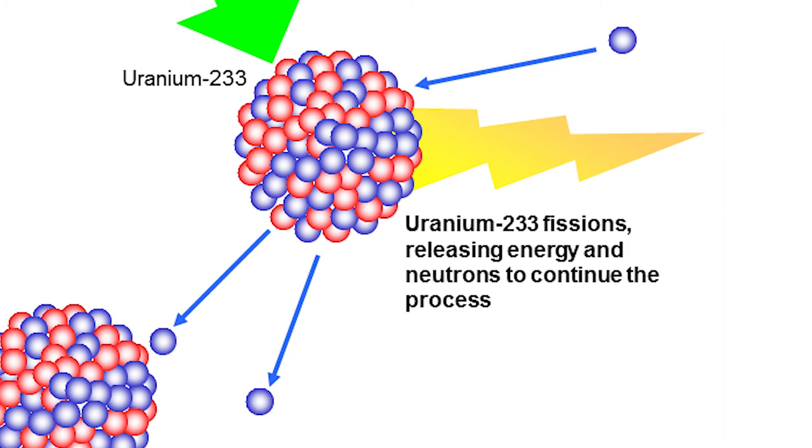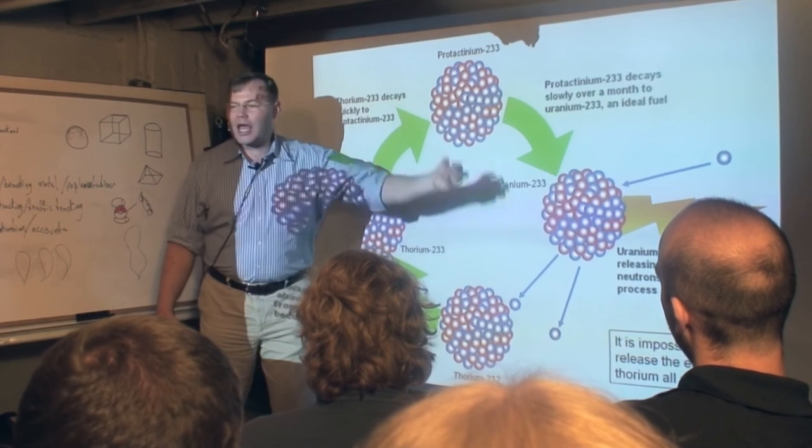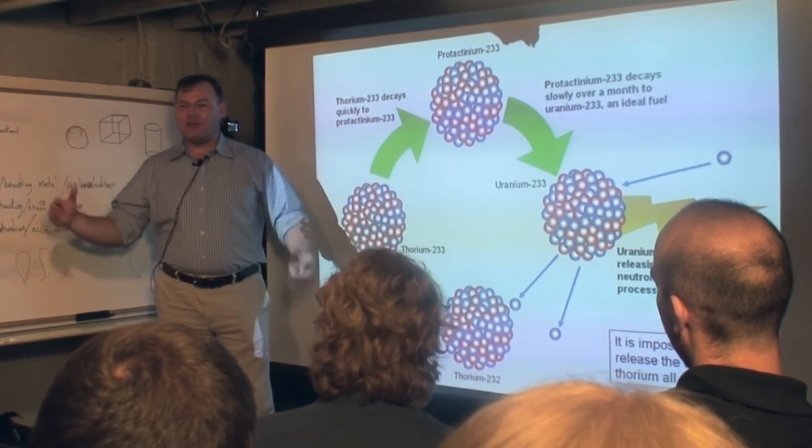You're fissioning uranium-233 but you're making a new one. You can almost think about it as a pseudo catalyst. If you had some uranium-233, you could catalyze the burning of thorium indefinitely.